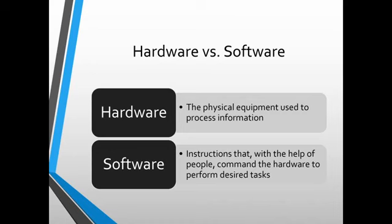Now we can see the definition of software. Software is instructions that, with the help of people, command the hardware to perform desired tasks. In software, we have instructions telling the computer what to do and how to do it — to process data into information and get the desired task done.